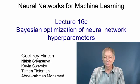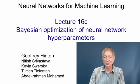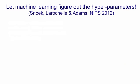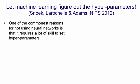It's very easy when exploring by hand to fail to notice things. Gaussian processes are very good at noticing trends in the data, and they provide a very good way of finding good sets of hyperparameters if you have enough computers. One of the commonest reasons that people give for not using neural networks is that it requires a lot of skill to set the hyperparameters.